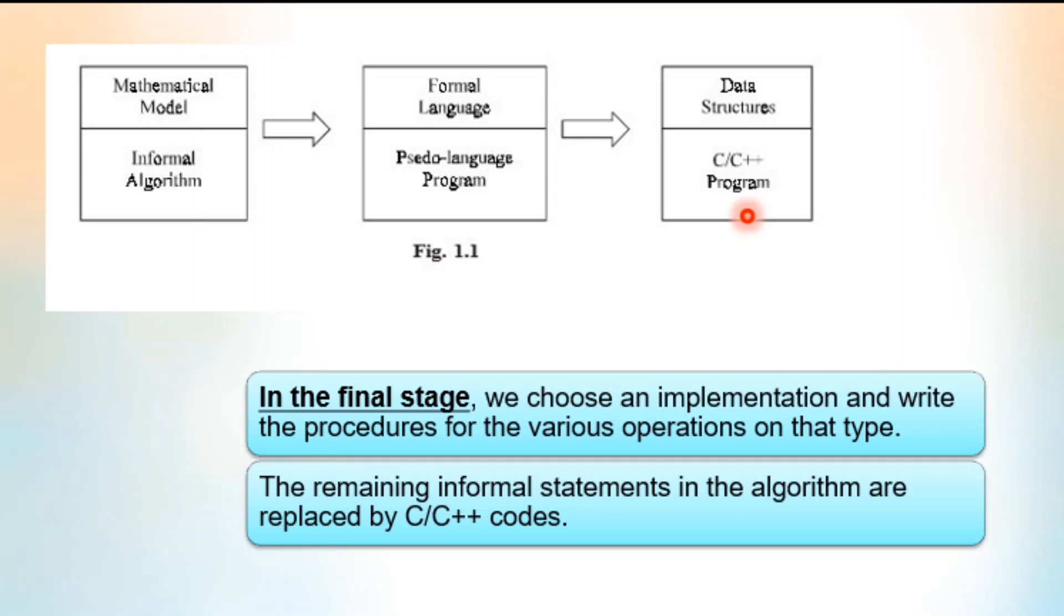So these are the three steps in the stepwise refinement method: First, to solve a problem we write the informal algorithm based upon some mathematical model. Then we refine this informal algorithm and write it in a formal language that is half programming construct and half English language. Afterwards, we convert the whole thing into a programming language and develop the program.